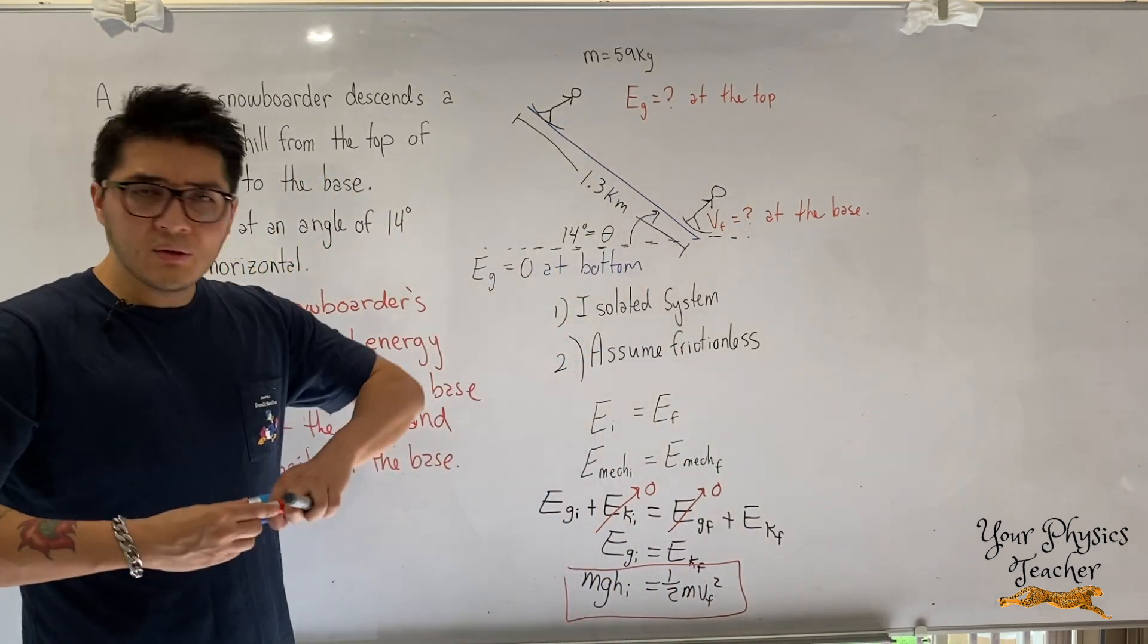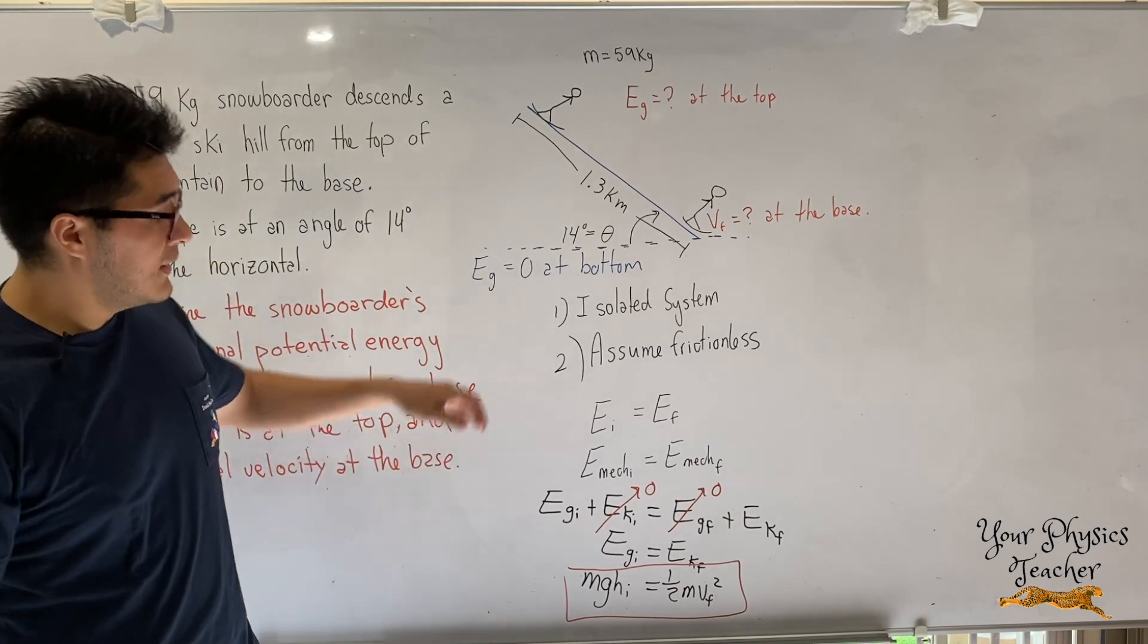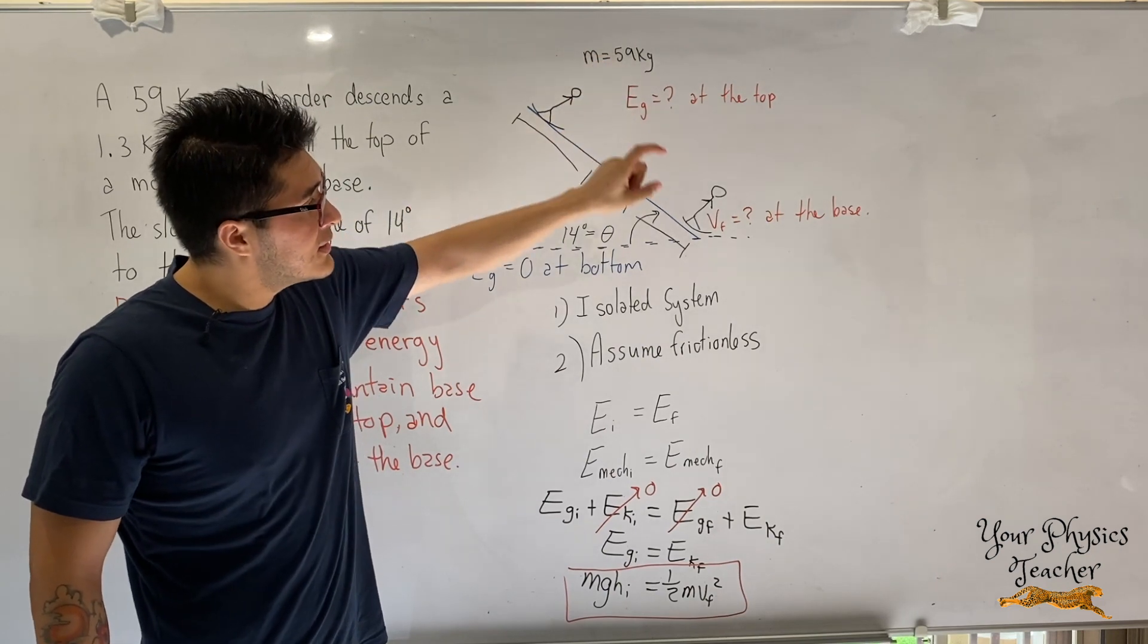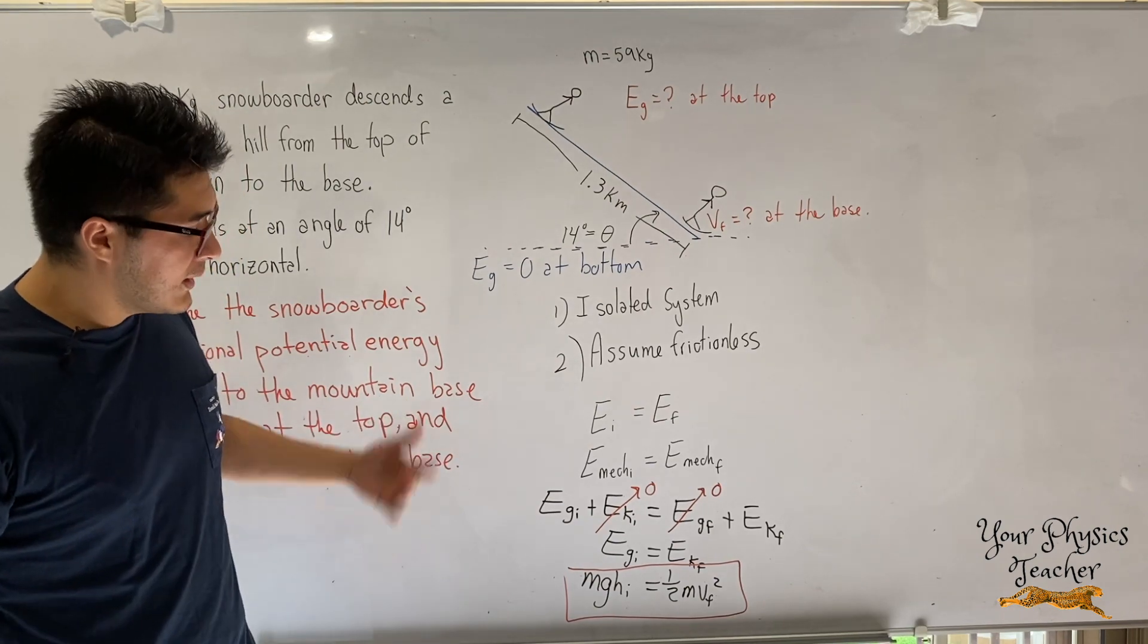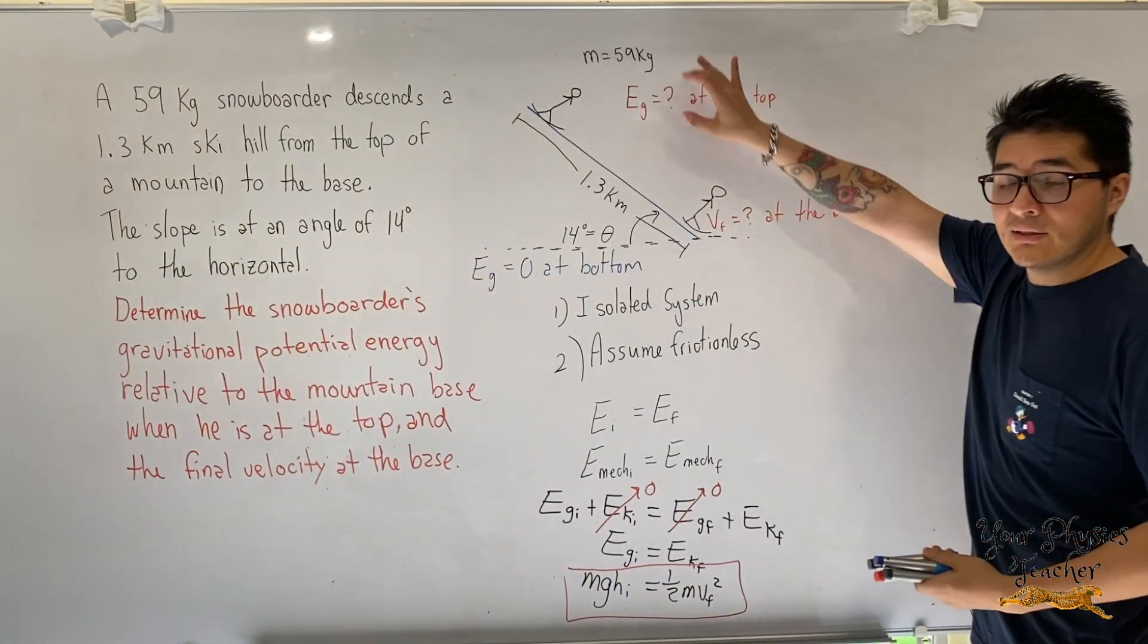But at this point, you already forgot the question, right? What they were even asking us. Good thing we drew the diagram. They asked us to calculate the potential energy at the top and the final velocity at the base. So let's do one thing at a time. Let's calculate the potential energy at the top.